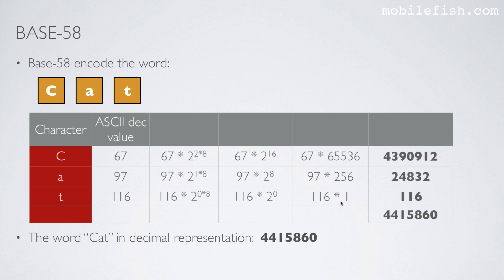Then you multiply both values. The multiplication result can be found in this column. If you add these three values together, you will get this value. The word CAT in decimal representation is this value.